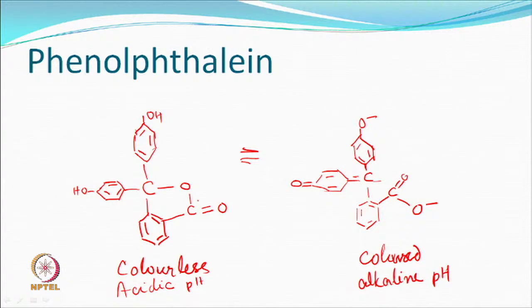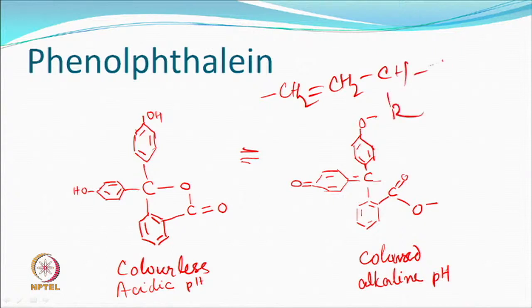If it is a continuous conjugation, it will help. Even if you have CH2, CH2, or CHR groups, if you can create this type of single-bond conjugation, then even a linear molecule or an aromatic molecule — it does not matter — you will be getting colour.